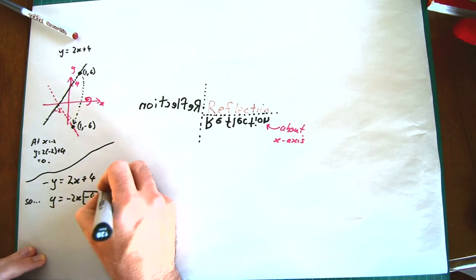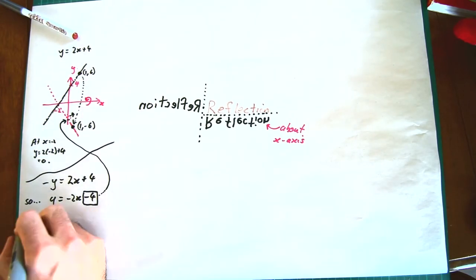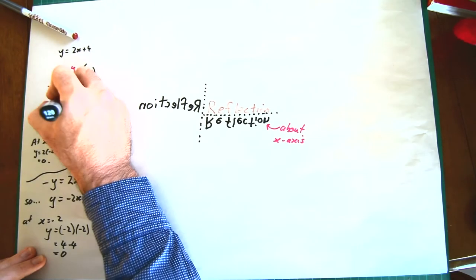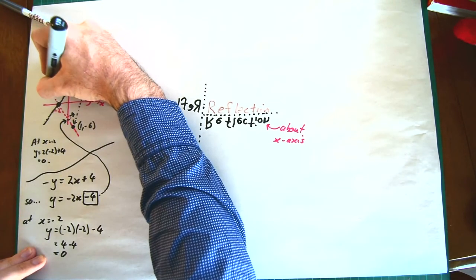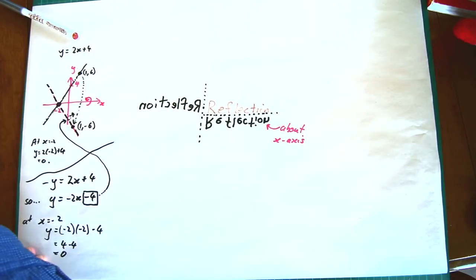It's a slope of negative 2 and it crosses at negative 4. If we substitute in x equals negative 2, we still get y equals 0, so the x-intercept has remained fixed. The slope is the same slope except negative, and the y-intercept is the same y-intercept except negative. We've produced the reflection we want.